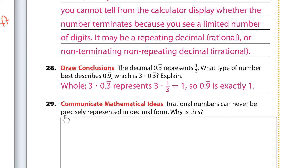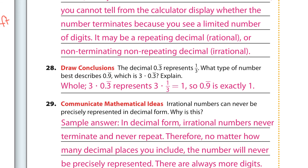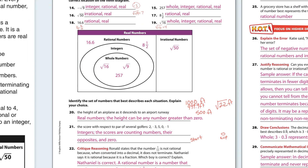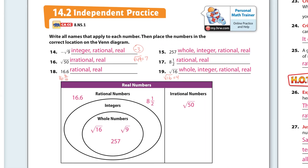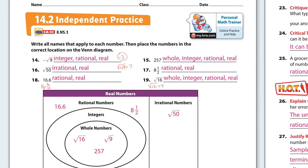Irrational numbers can never be precisely represented in decimal form. They aren't a fraction of integers. In decimal form, irrational numbers never terminate and never repeat — therefore, no matter how many decimal places you include, the number will never be precisely represented. There are always more digits. That's what you've got to know for this independent practice.